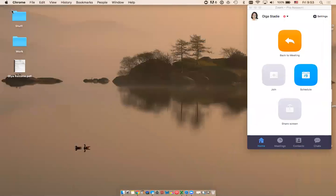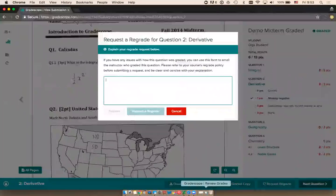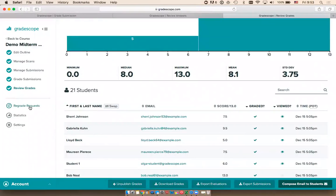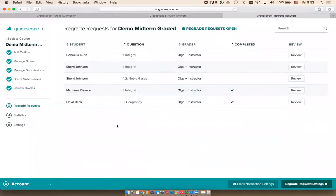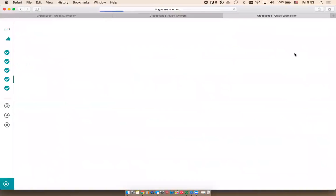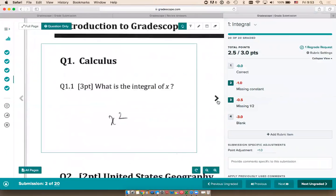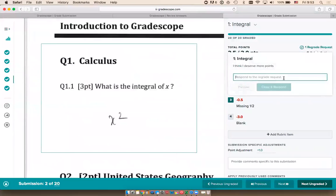On the instructor side, you have a regrade request page. You'll see all incoming regrade requests here and can review them. I can see the student said 'I think I deserve more points.' You can look at their submission. If they do, you can change the rubric or give them a point adjustment. Regardless, you can reply to the regrade requests, and the student's going to get an email with that reply.